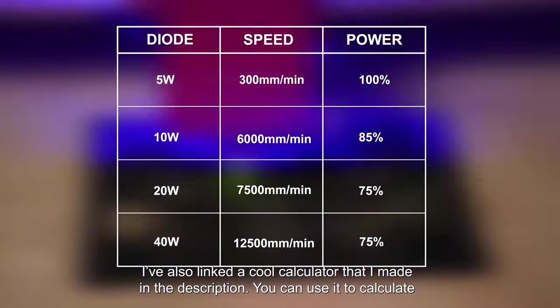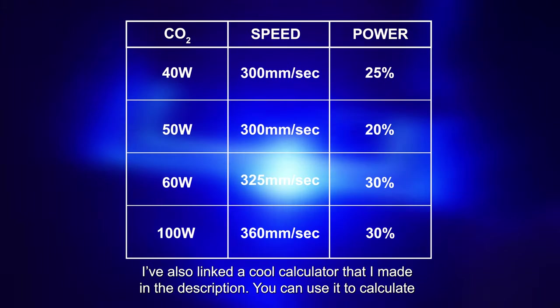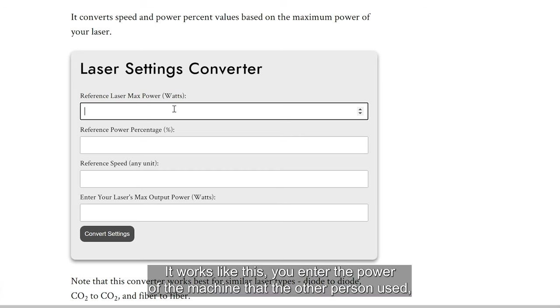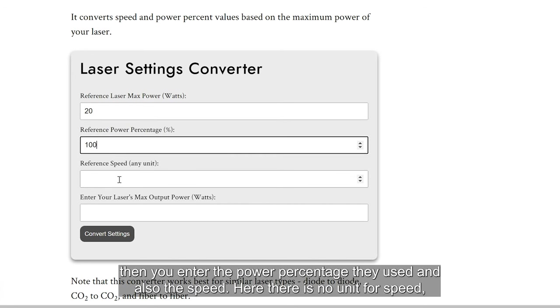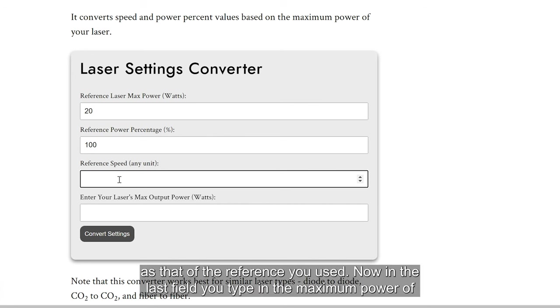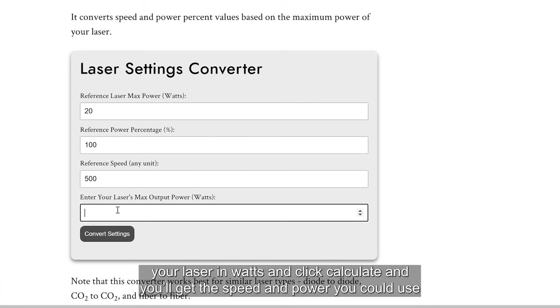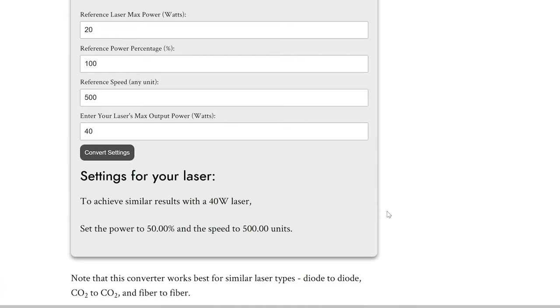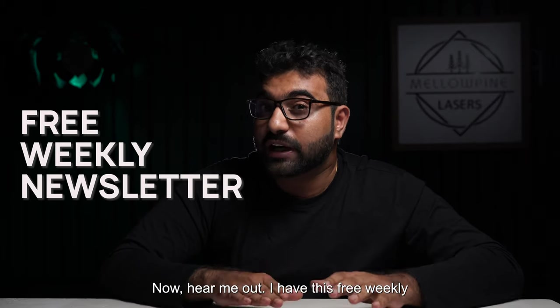I've also linked a cool calculator that I made in the description. You can use it to calculate the speed and power setting for your setup if you have the settings someone else used. It works like this: you enter the power of the machine that the other person used, then you enter the power percentage they used and also the speed. Here there is no unit for speed, so you need to understand that the unit of the answer you get would be the same as that of the reference you used. Now in the last field, you type in the maximum power of your laser in watts and click calculate, and you'll get the speed and power you could use on your laser to get a similar result.